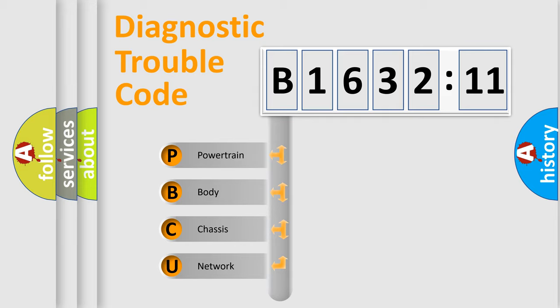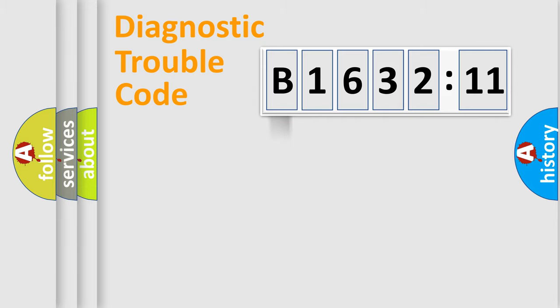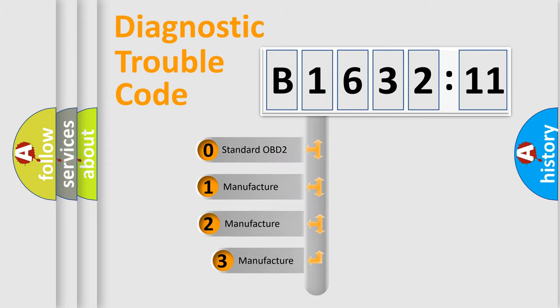We divide the electric system of automobile into four basic units: Powertrain, Body, Chassis, and Network. This distribution is defined in the first character code.